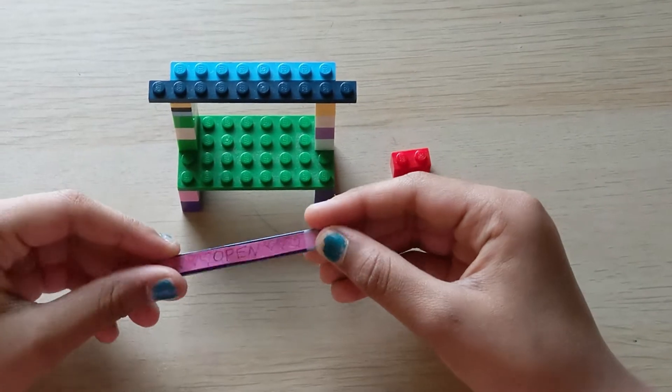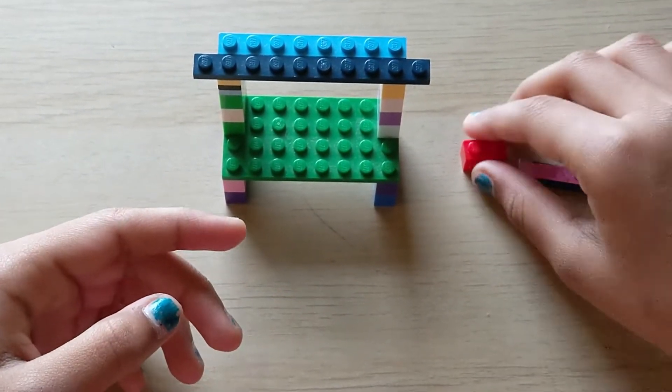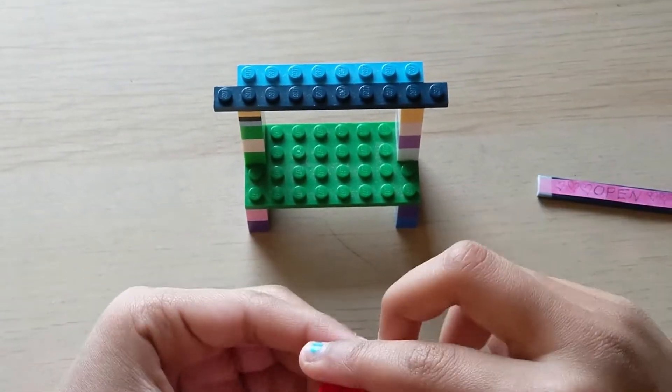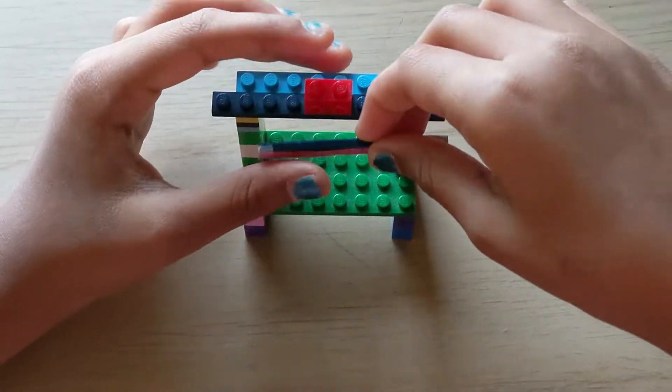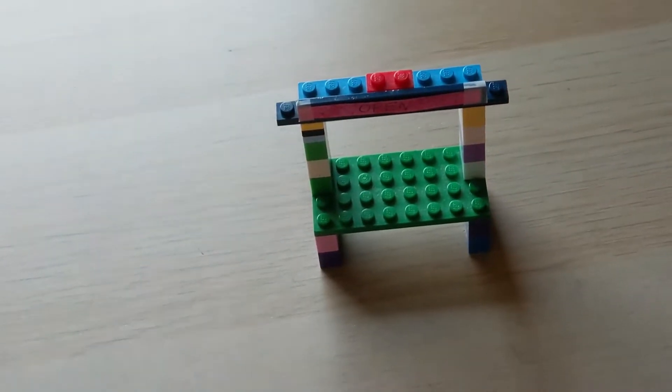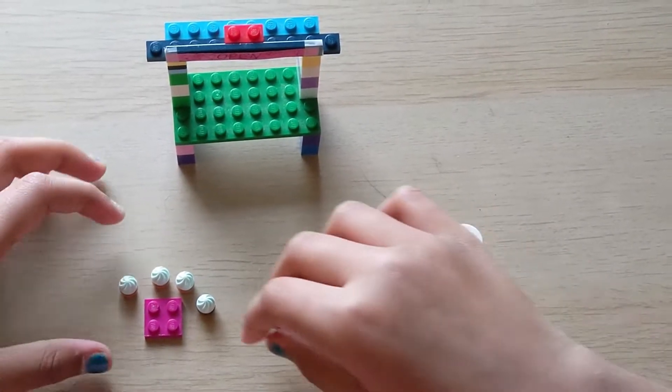Now for the little sign, you're gonna need a piece like this. I use this flat piece and drew my own cute little sign. You're gonna need a piece like this, a double block as I call it, and I stick it smack dab in the middle and add your little sign. And it's open! Now we just have to add the food.